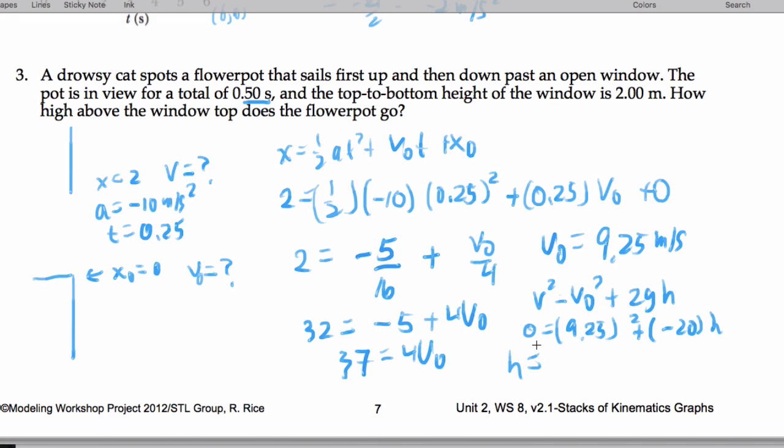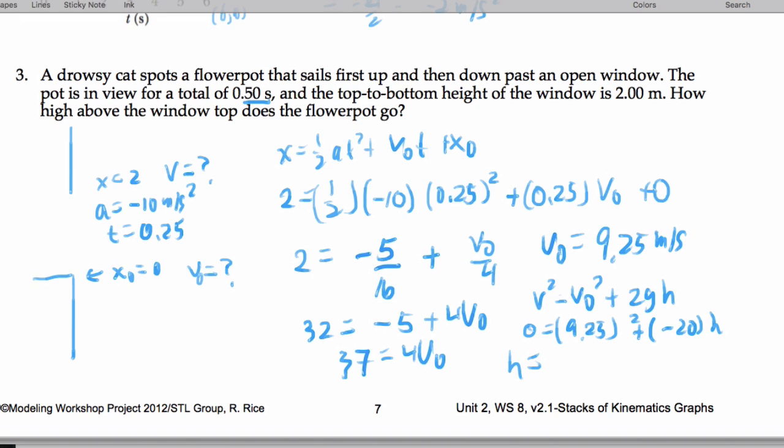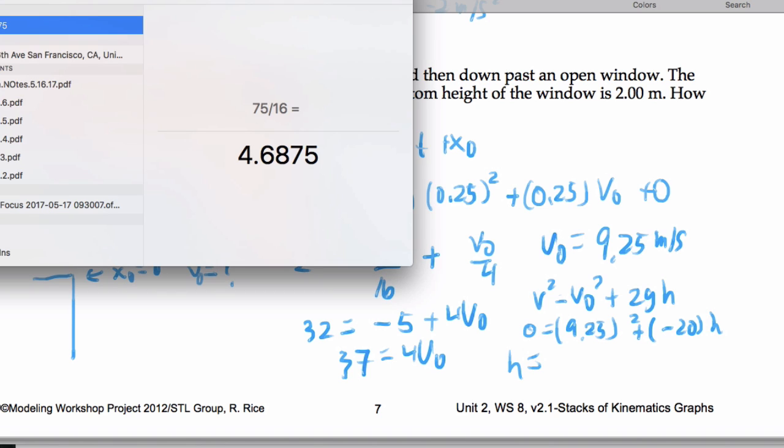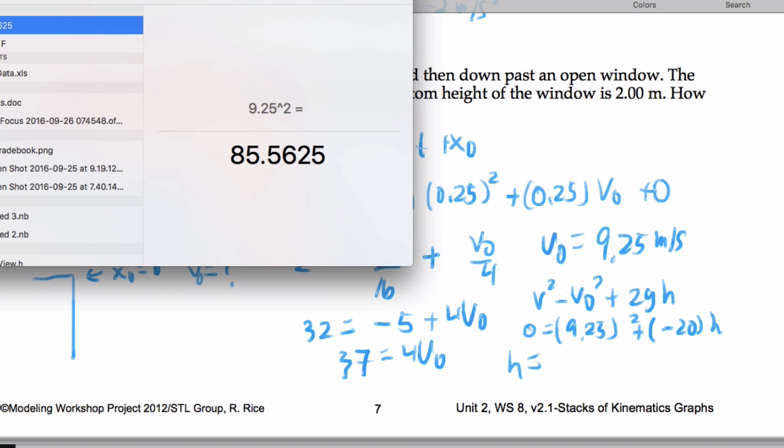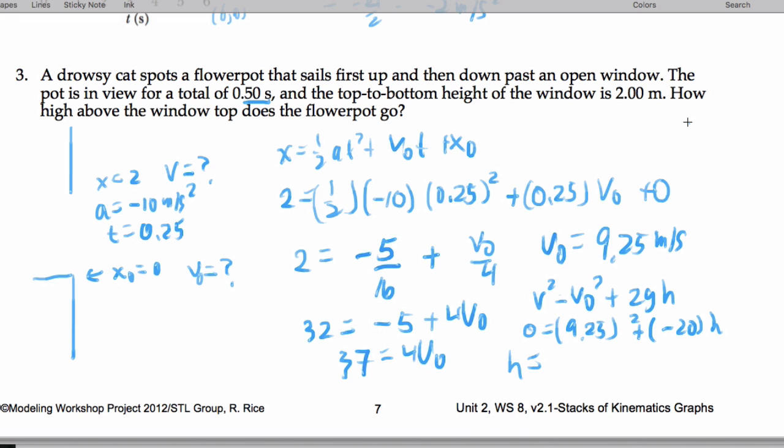So the total height ends up being... So wow, I'm divided by 20. So I'm getting 4.28 meters above the bottom of the window.